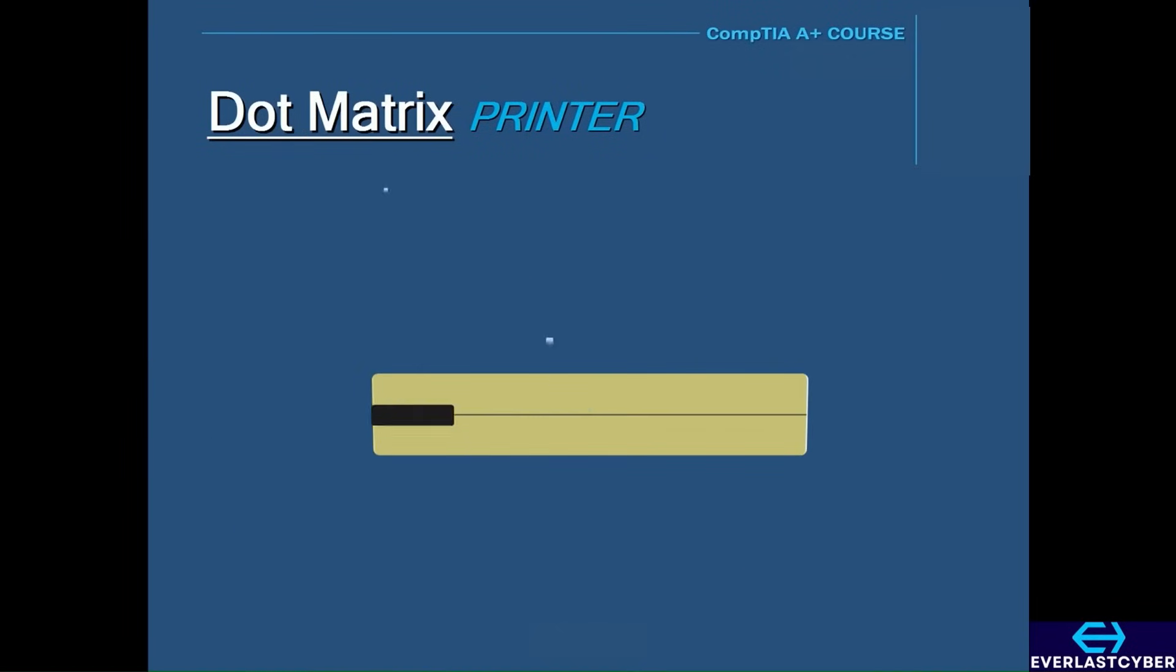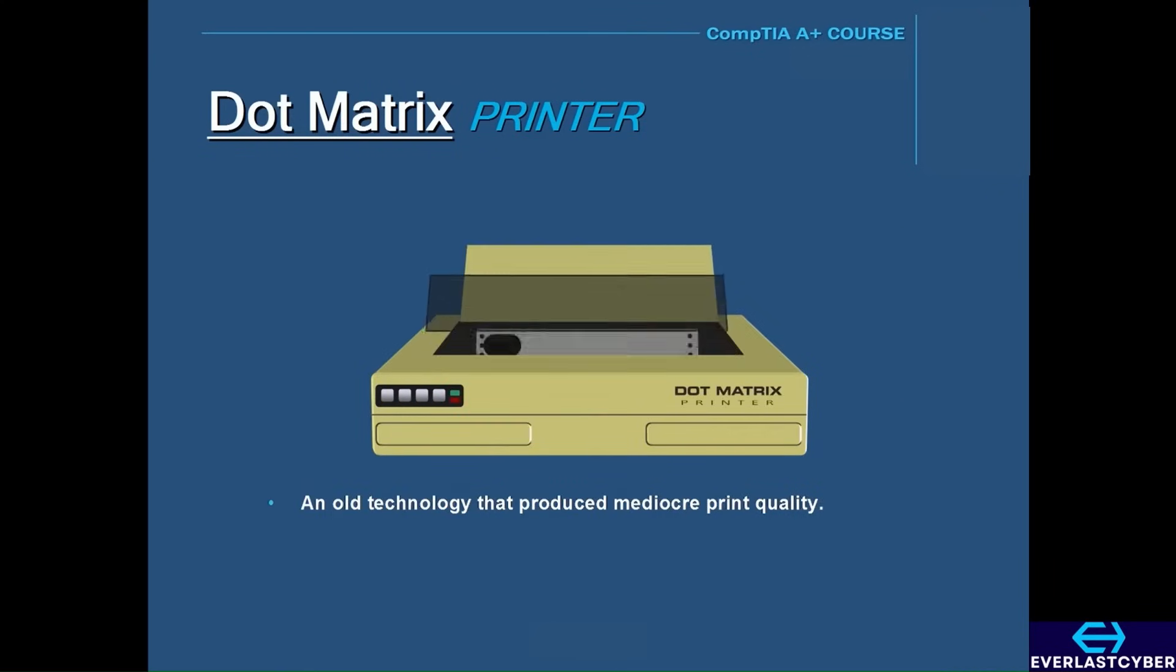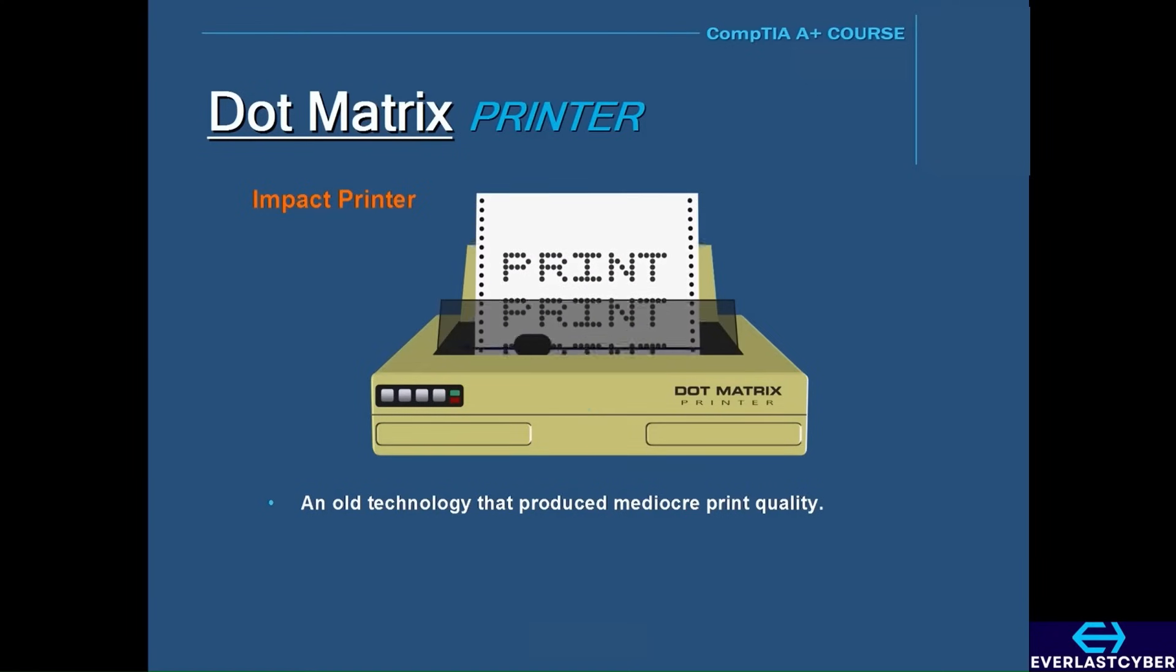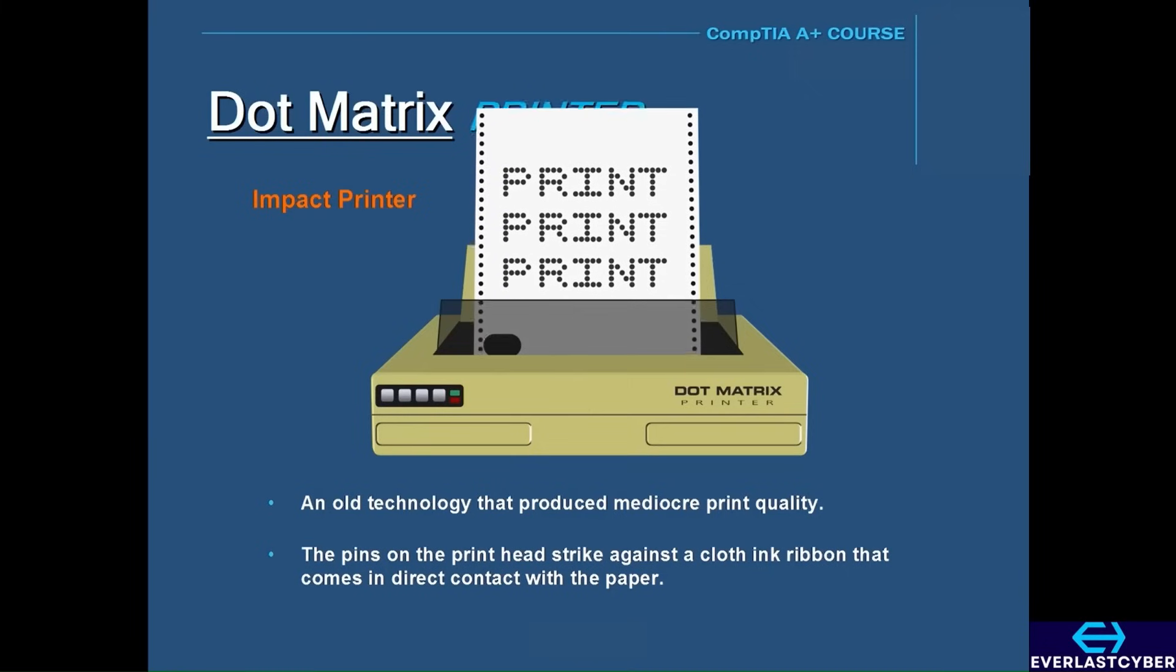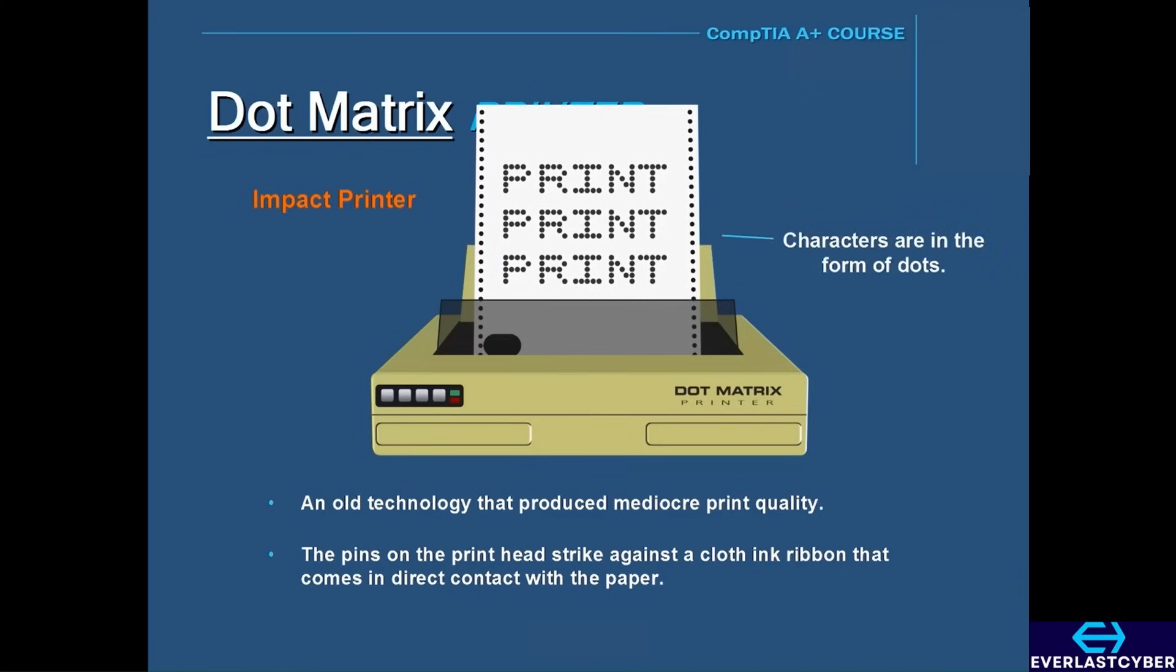Dot matrix printers are almost non-existent today. They are an old technology that produces mediocre print quality when compared to laser or inkjet printers. And they are also very noisy. Dot matrix printers are impact printers. The print head in a dot matrix printer moves across the paper. And as it moves, the pins on the print head strike against a cloth ink ribbon, which then comes in direct contact with the paper, producing each character in the form of dots. But despite being an outdated technology, dot matrix printers can print multi-copy documents like carbon copies. They are also durable and last a long time.